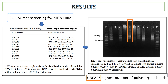Moving to the results: first, we performed ISSR primer screening for MFin-HRM technology. We selected over 10 primers and ran a 1.5% agarose gel electrophoresis visualized under ultraviolet light. Based on the banding pattern, UBC825 showed the highest number of polymorphic bands.